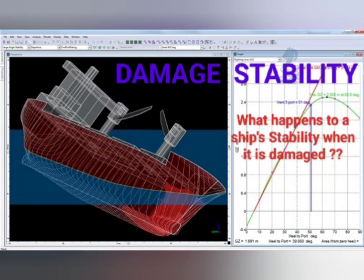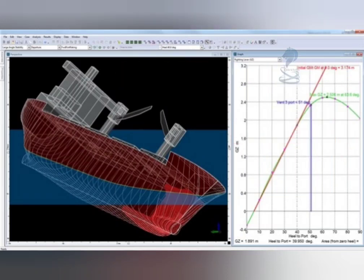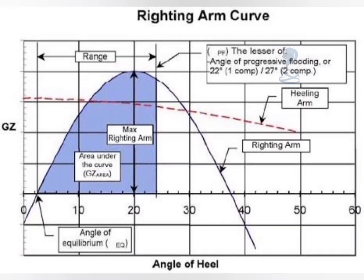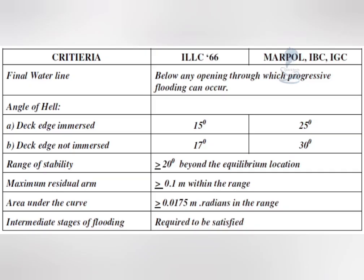Damage stability. A damage stability criterion varies from ship to ship, and the requirement for the same is given in SOLAS chapter E1. It may be single compartment flooding, multi-compartment flooding, or engine room flooding under all the criteria as applicable. The vessel margin line should not be submerged after the damage.